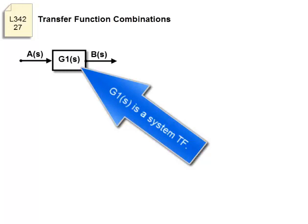Transfer function combinations. G1 is a system transfer function. S is the independent variable, a complex variable, the Laplace transform variable.